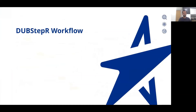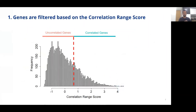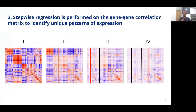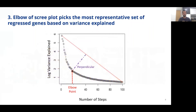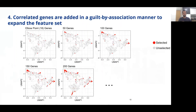Thus, we used this information to build Dubstepper. The first step is separating genes which have a high correlation-grain score from those which don't. These genes are then used to construct a gene-gene correlation matrix, upon which we perform stepwise regression to identify unique patterns of expression. We use a scree plot to determine the elbow point to stop performing regression, identifying the minimal set of representative genes, and use a guilt-by-association approach to add correlated genes to this feature set to fortify the directions of variation.